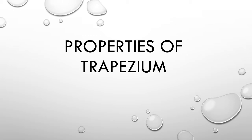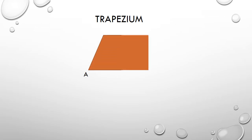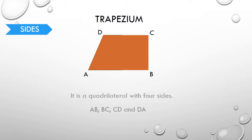Properties of trapezium. What is a trapezium? Let us consider the figure ABCD. It's a quadrilateral because it has four sides. A trapezium also has four sides, namely AB, BC, CD and DA.